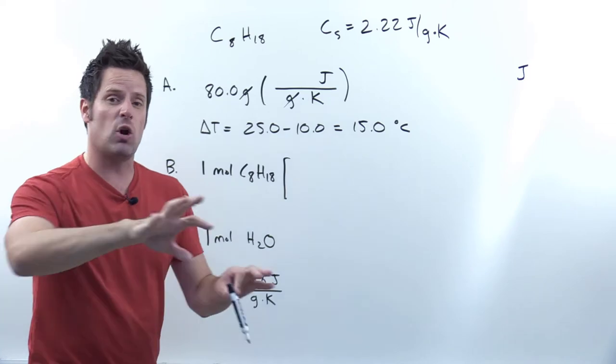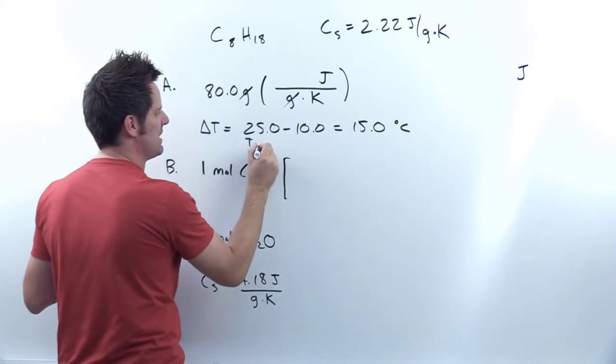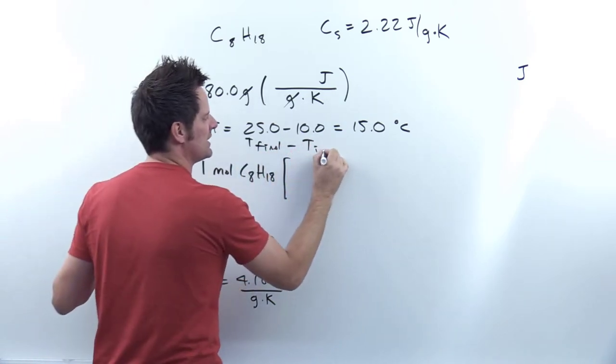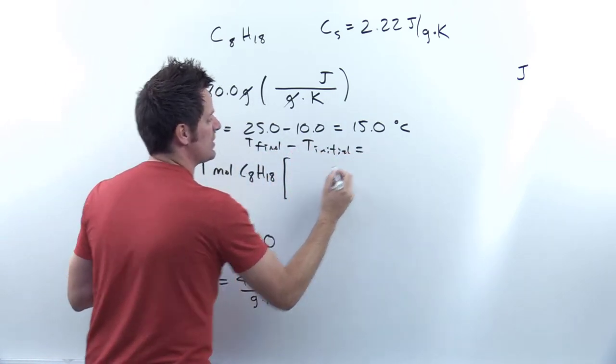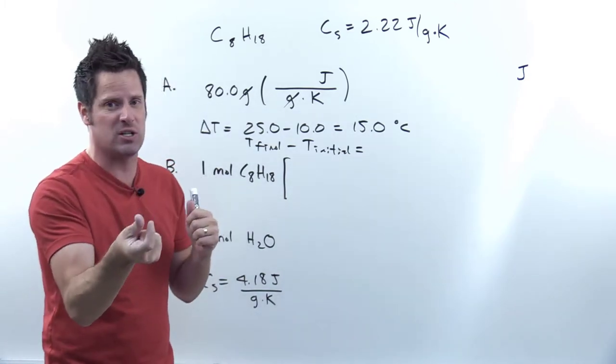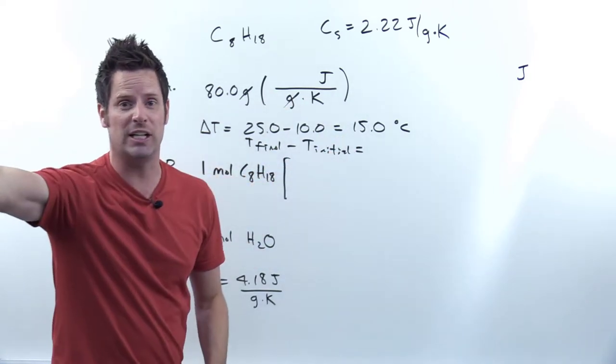Now, the kelvins are all embedded in the change in temperature. Change in temperature ΔT is equal to T final, in this case 25°C, minus T initial, right? Now, if you're talking about a ΔT, not an absolute specific individual number T, but a ΔT, degrees Celsius and kelvins are completely interchangeable.